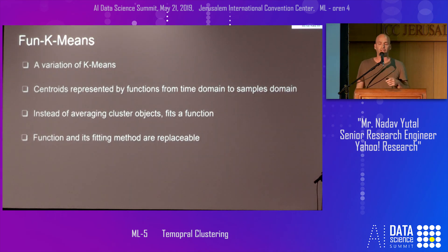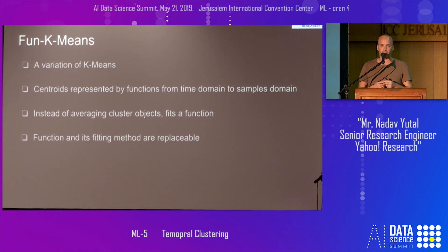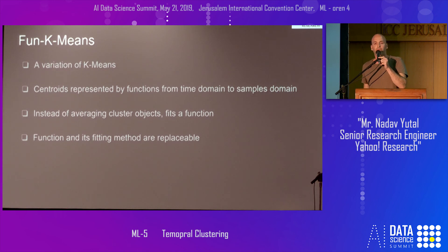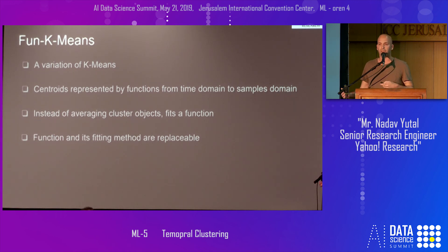The core idea of FunKMeans: we take the centroid that in k-means comes from the same space domain and replace it with a function from the time domain to the space domain. In that way, we get consistent centroids that smoothly change over time. Of course, you can no longer update the centroids by averaging, so we use function fitting. The nice feature of our algorithm is that the function and the fitting method are pluggable and can be dictated by the user — you can put in constraints and your own assumptions.